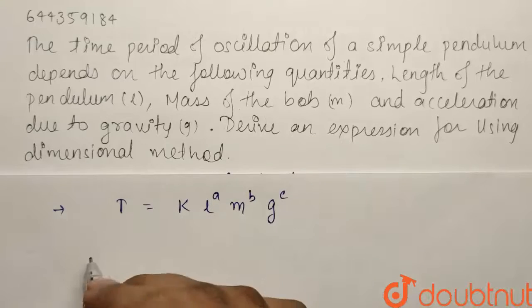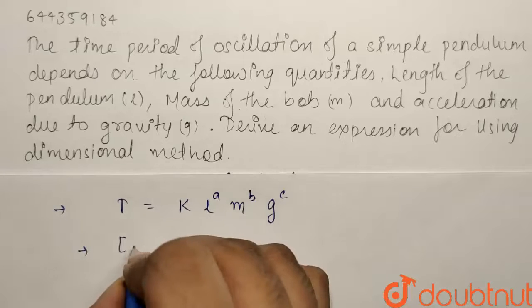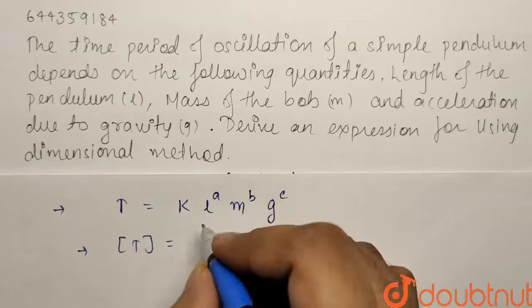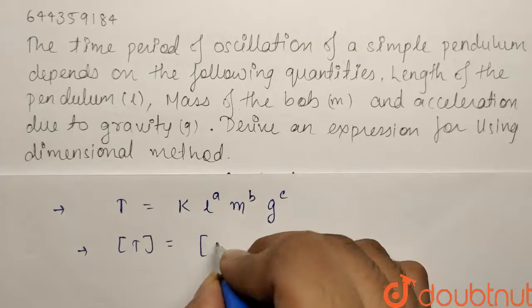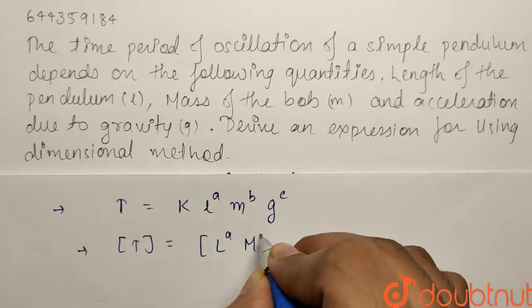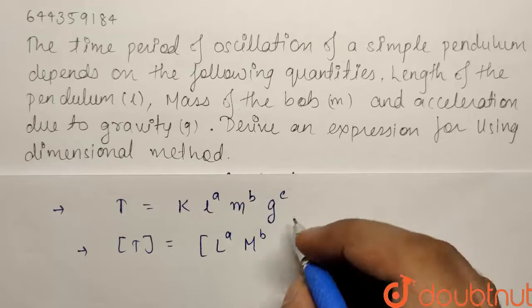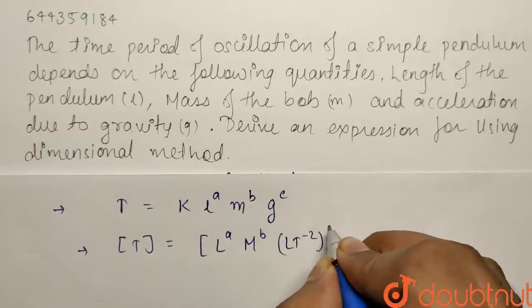So for this to happen we know that dimension of LHS has to be equals to RHS. So dimension of T has to be equals to k is dimensionless, so it will be dimension of L that is length itself to the power a, dimension of m that is M itself to the power b, and dimension of g that is LT^-2 to the power c.